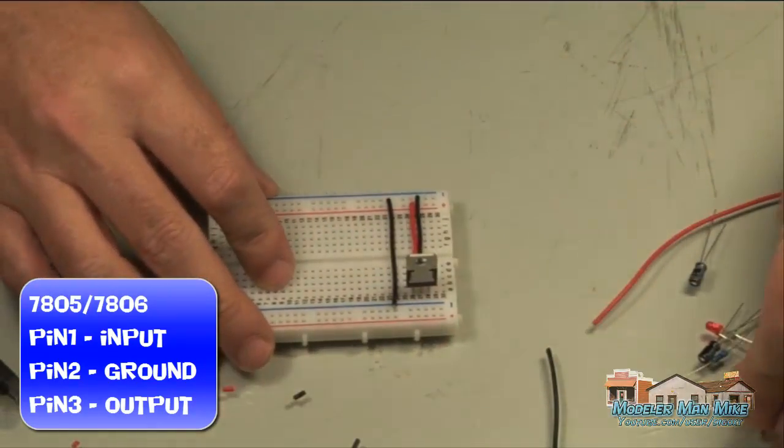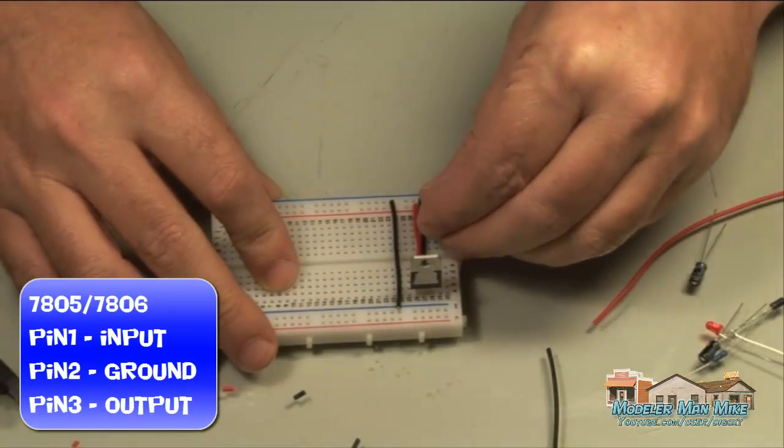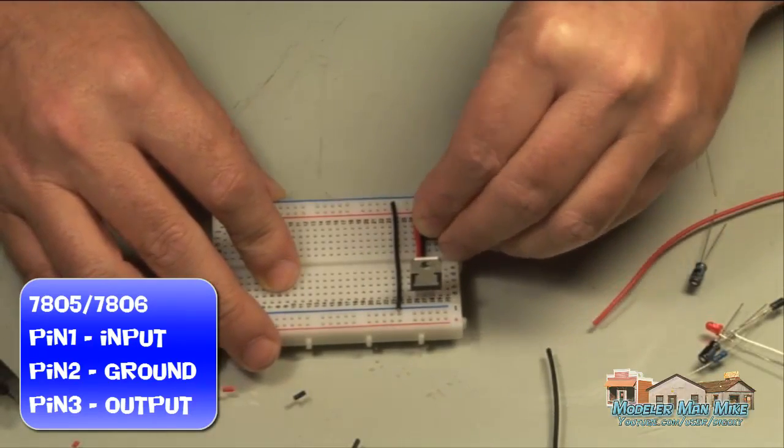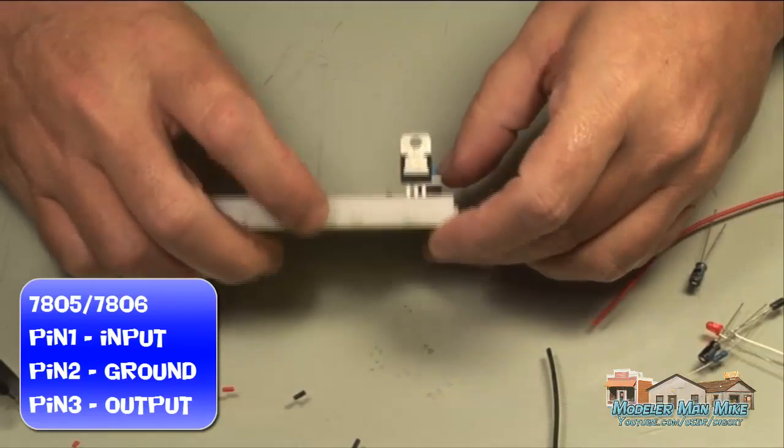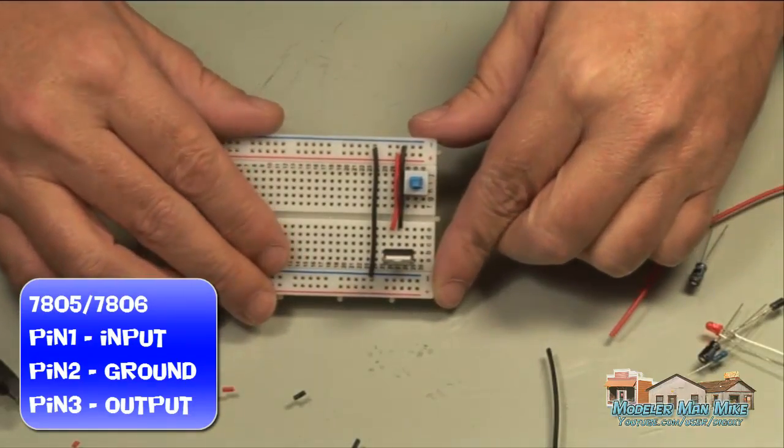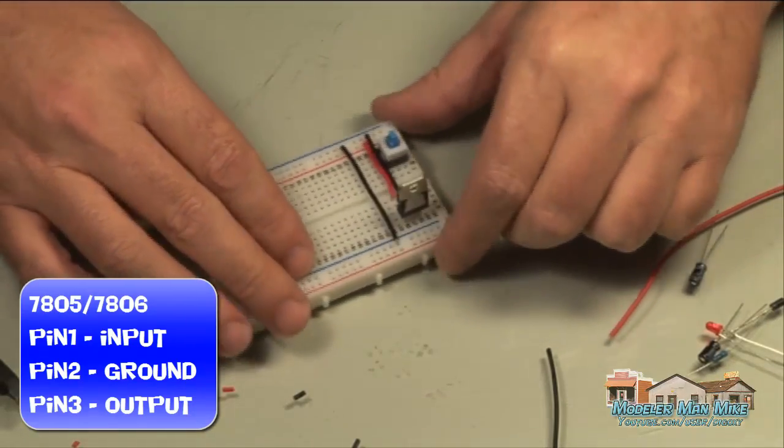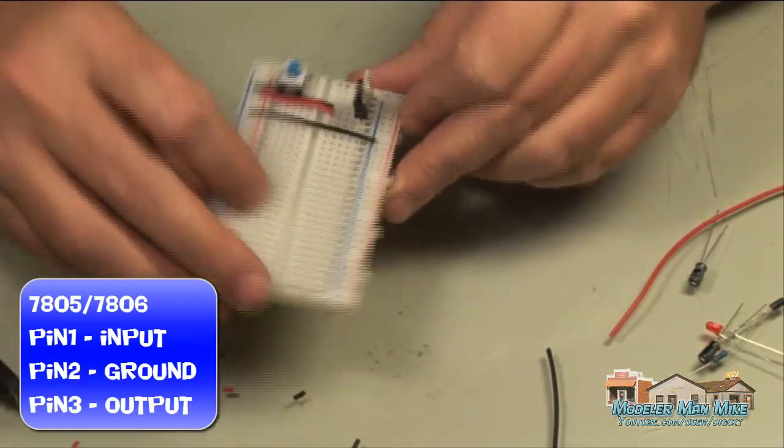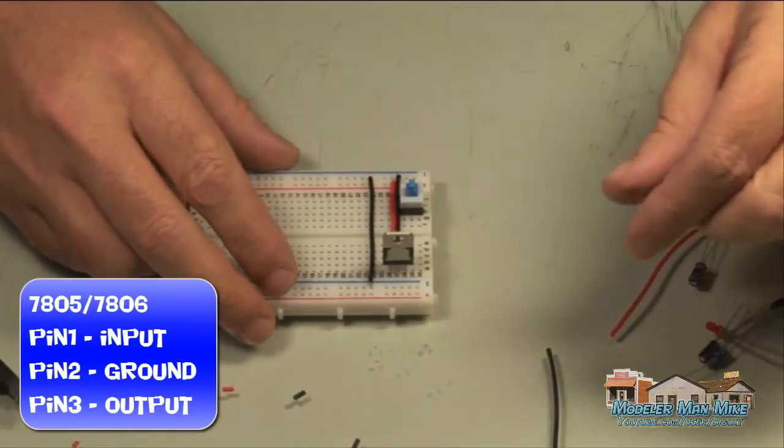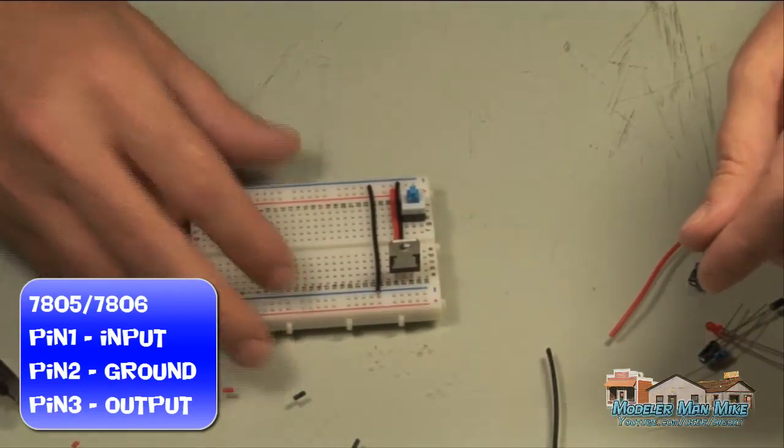So I'll run that down to my power bottom rail there. Now add a switch. You don't have to use a switch, I like to, it just makes things easier. You can do this with a jumper just as easy to turn it off and on, but I kind of like using a switch, it just makes it easier.